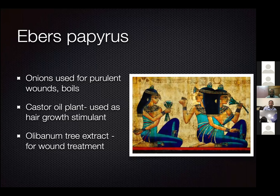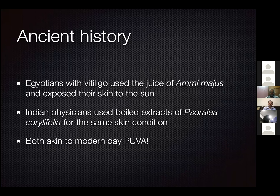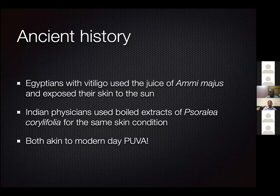In 2000 BC, Egyptian physicians asked patients with vitiligo to take leaves of a plant called Ammi majus, which grew along the Nile, apply the juice to vitiliginous skin, and then expose it to the sun. Similarly, in 1400 BC, Indian physicians boiled a plant called Psoralea corylifolia — where we get the term 'psoralen' from — took the extract, applied it to the skin, and exposed it to the sun. These were the precursors for modern-day PUVA, meaning Egyptian and Indian physicians knew about this 4,000 years ago.